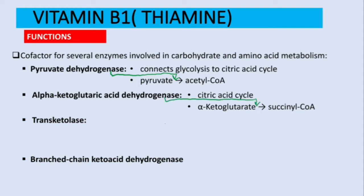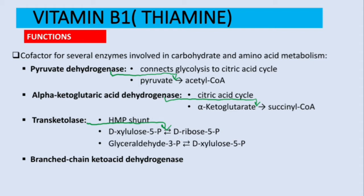Transketolase is found in the hexose monophosphate shunt, also known as the pentose phosphate pathway. This enzyme catalyzes two main reactions: the conversion of xylulose-5-phosphate to ribose-5-phosphate (reversible), and glyceraldehyde-3-phosphate to D-xylulose-5-phosphate (also reversible). We'll cover these in the pentose phosphate pathway video, but for now just remember transketolase is in the hexose monophosphate shunt.